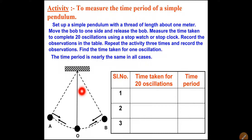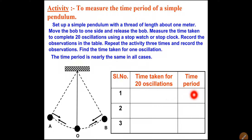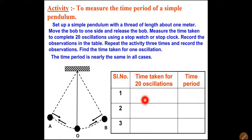Now here is an activity to measure the time period of a simple pendulum. You set up all the apparatus, take the simple pendulum, and release it from position A. When it goes to B and comes back to A, that counts as one oscillation. You count the time for 20 oscillations and note down how much time is required. In this way, count up to 20 oscillations and check how much time is required to complete those 20 oscillations.